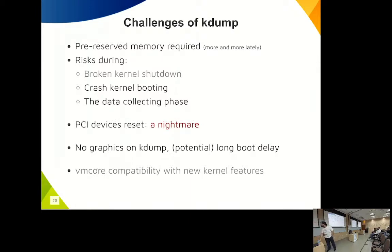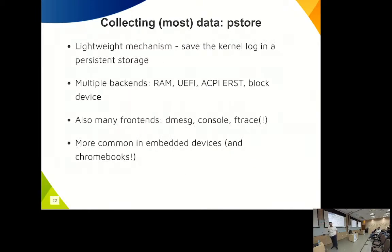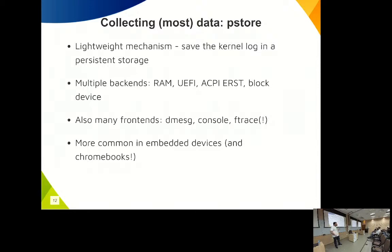Given all the kdump challenges, there's an alternative called pstore. pstore is a lightweight mechanism — unlike kdump, it does not boot another kernel. In the final phase of the broken kernel, the pstore frontend dumps the kernel log to a backend. There are multiple frontends and backends. One combination we use is ramoops — a small reserved portion of memory, untouched by the kernel, where the kernel log is dumped before rebooting. It's very fast: just a write to memory, then reboot, no full second kernel boot needed.